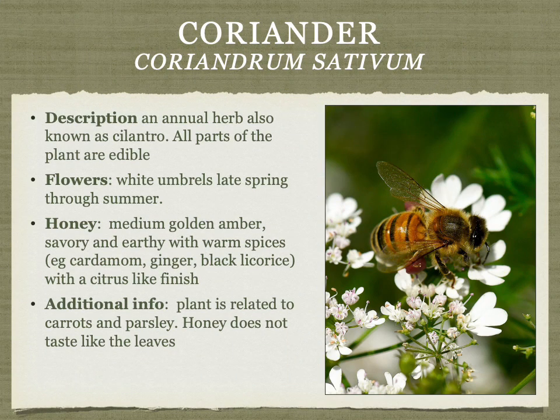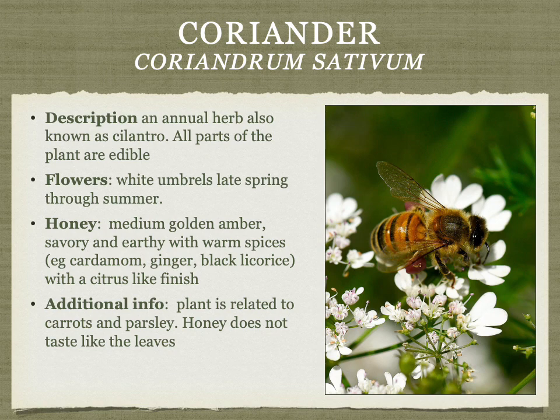Coriander, also known as cilantro — though some people find the leaves soapy due to a genetic variant — produces a honey that does not have that soapy taste at all. The honey is medium golden amber, savory and earthy with warm spices. It's very complex and difficult to describe in words, sometimes with a tart, crisp, citrus-like finish.